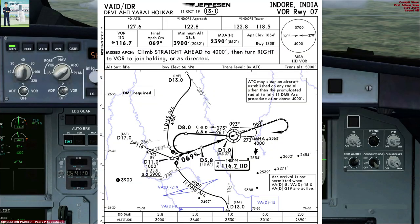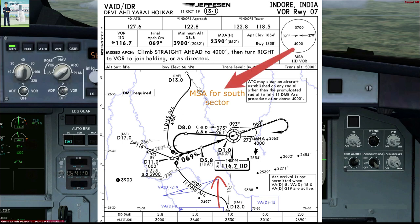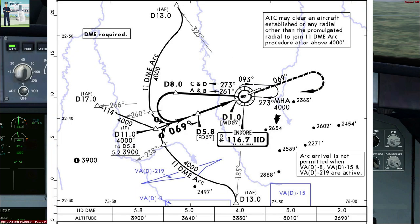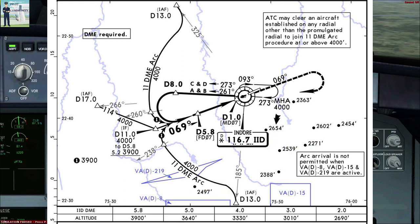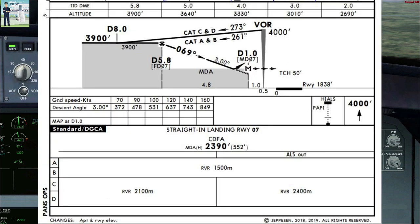Since we are approaching from the south, our minimum sector altitude is 4000 feet. In the plan view, there are certain danger areas and aircraft arrival is not permitted when these danger areas are active. We have cross-checked with our NOTAMs and none of these danger areas are active, so we are good to go. We also observe that the highest elevation is to the south-east of the airfield at 2654 feet.